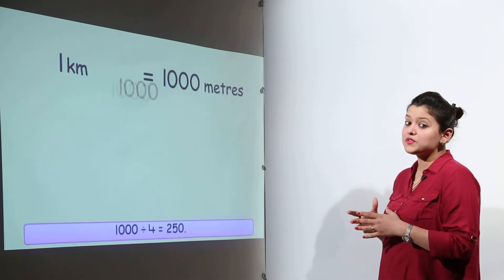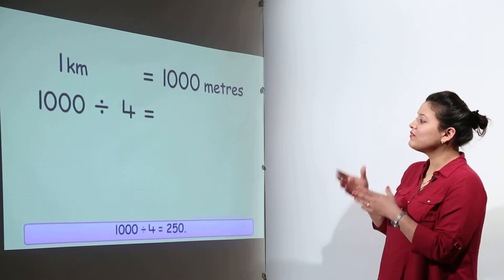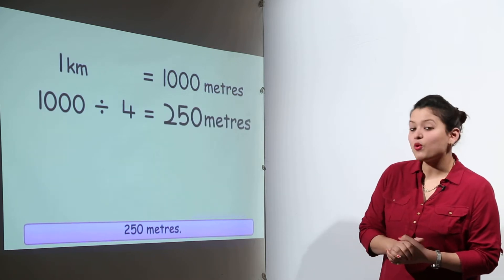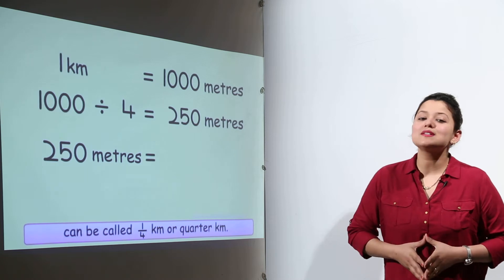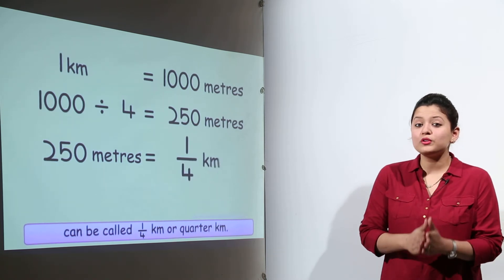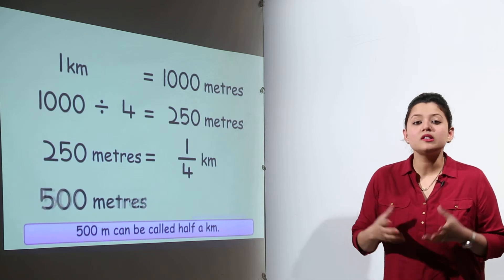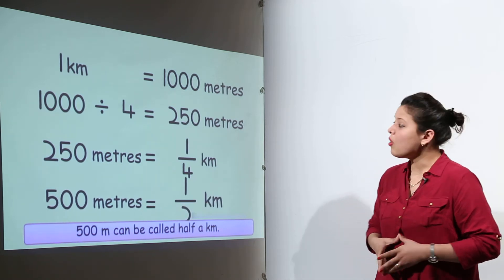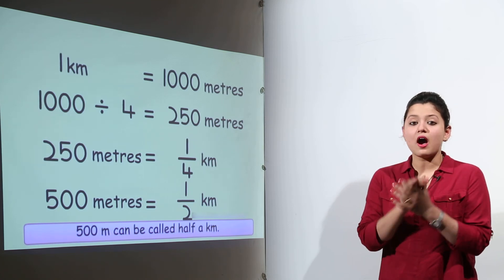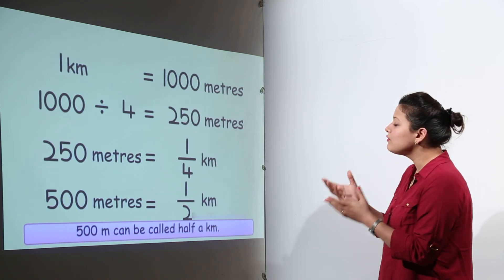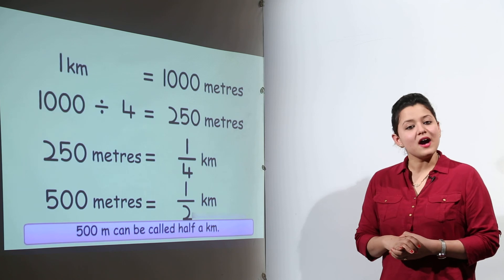1 kilometer has 1000 meters. And if we divide this 1000 with 4, what do we get? We get 250 meters. So 250 meters can be known as the one-fourth of 1 kilometer, or we can call it quarter of a kilometer. Also, we can see 500 meters is actually just half of that. So we can call 500 meters as a half kilometer.